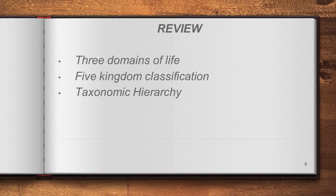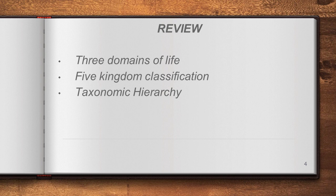The second topic was the five kingdom classification system. As per this system, the entire organisms are classified as five kingdoms: Monera, Protista, Fungi, Plantae, and Animalia. The third topic was taxonomy hierarchy — a classification order given for each species to identify organisms, with levels: Kingdom, Phylum, Class, Order, Family, Genus, and Species.